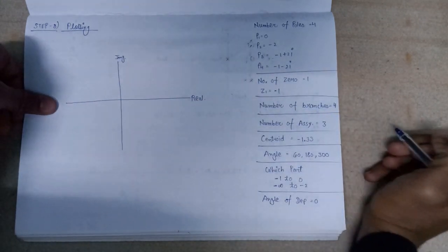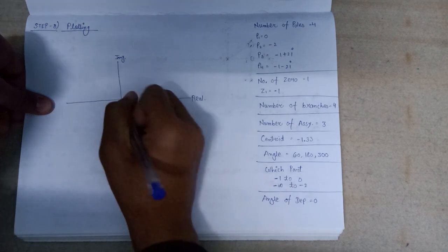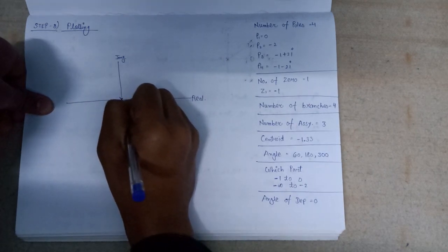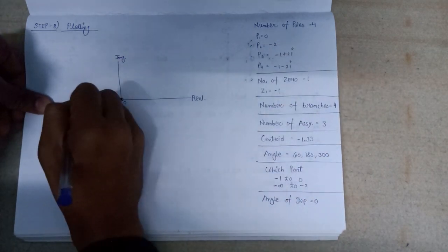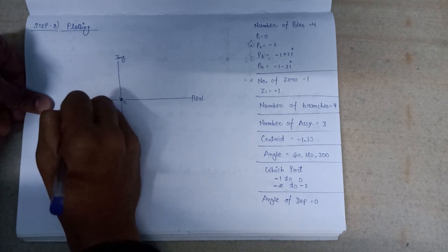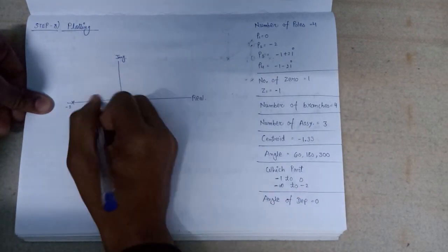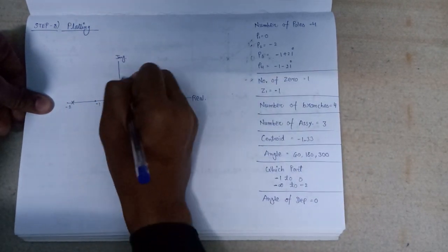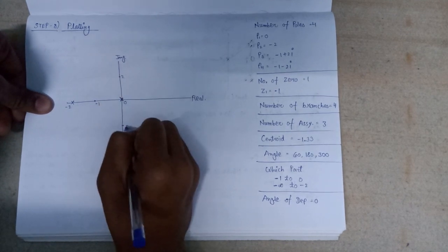Firstly we will plot all the poles and zeros. So pole P1 lies at 0, pole P2 lies at minus 2, pole P3 lies at... here is minus 1, it is 2, it is minus 2.